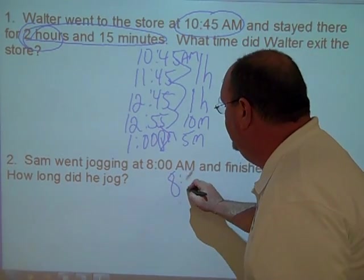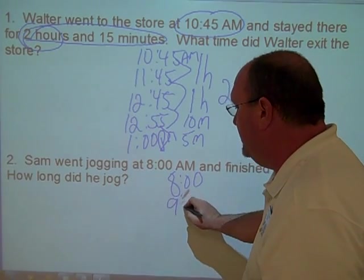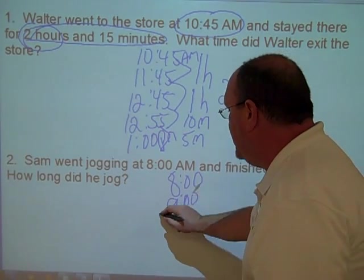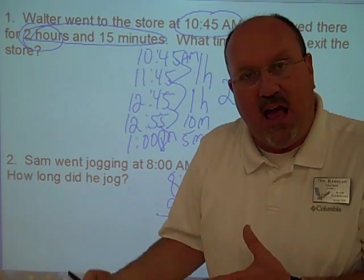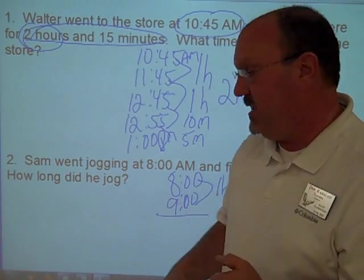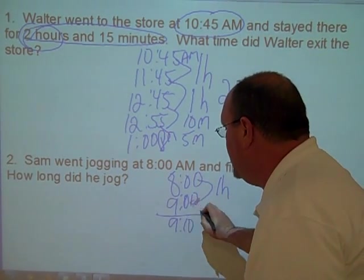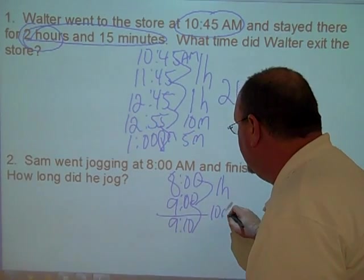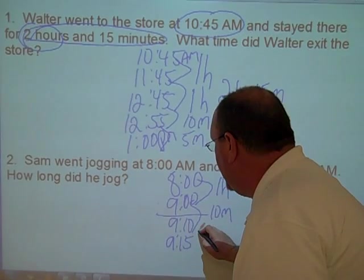8:00 o'clock. He went to 9:15, so we do have room for a whole hour. He went to 9:00 o'clock. That is one hour. Now I can't go another chunk of an hour. I have to go to ten minutes. If I go from 9:00 to 9:10, that is ten minutes. And then I can go to 9:15, which is five minutes.